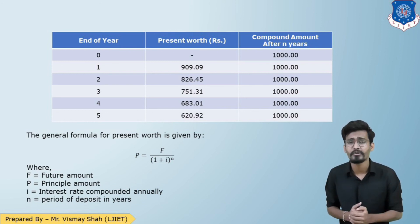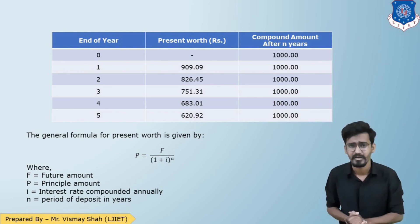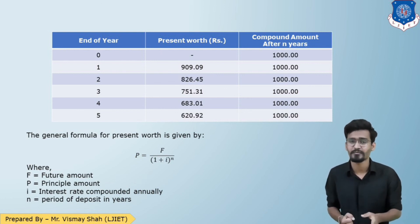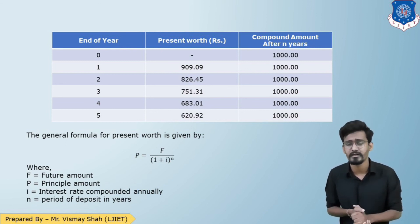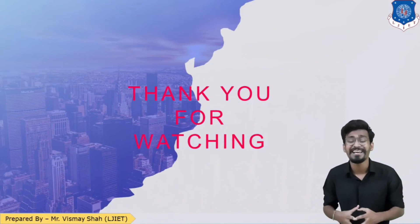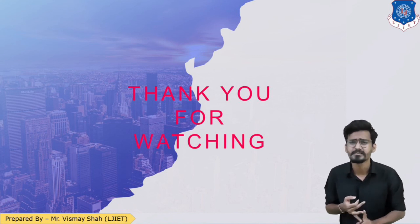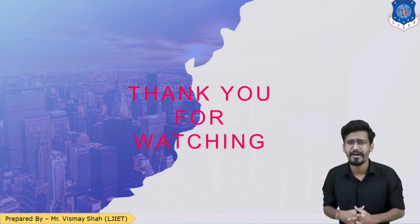Now let us briefly touch on cash flow. Cash flow is the movement of money in and out of the company — what goes in and what goes out in terms of money. Cash flow can be of two types: cash inflow and cash outflow. In the next session we will cover the cash flow diagram, factors affecting it, evaluating alternatives by equivalence, and the concept of equivalence. In case of any query or doubt, you can contact me on my email or number. Thank you.